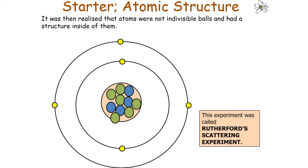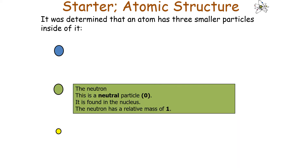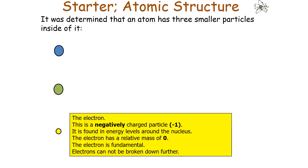This model was experimentally confirmed by Ernest Rutherford in Manchester in 1911 in the Rutherford scattering experiment. It was determined that an atom had three smaller particles inside it: the proton, a positively charged particle found in the nucleus with a relative mass of 1; the neutron, a neutral particle found in the nucleus with a relative mass of 1; and the electron, a negatively charged particle found in energy levels around the nucleus with a relative mass of 0. It's important to know that the electron is fundamental, meaning it can't be broken down any further.